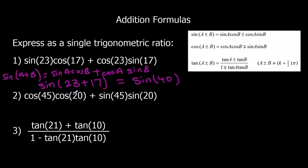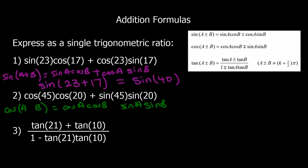The second one, we've got cos cos and sin sin, so that's the cos formula. It's either cos(A + B) or cos(A − B), which is cos A cos B ± sin A sin B. We've got a plus in the middle here, so using the bottom sign means we're going to have a minus on the left side. A is 45 and B is 20, so cos(45 − 20) = cos 25. And again, we can check that on the calculator.